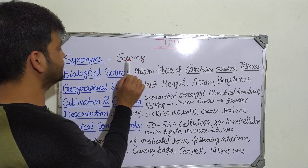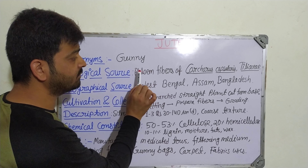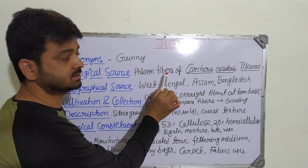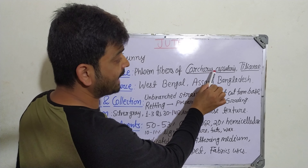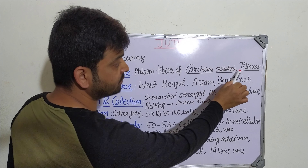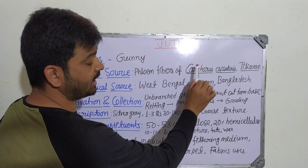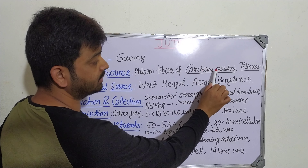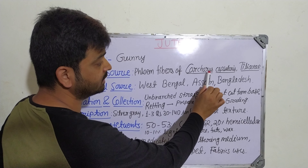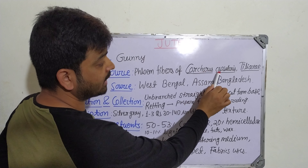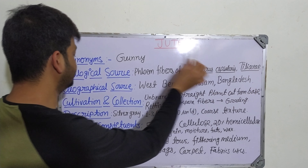It is also known as gunny. Coming to the biological source, it is nothing but phloem fibers of Corchorus capsularis, belonging to the family Tiliaceae. You have to remember this plant name from where we are getting the jute fiber — Corchorus capsularis, family Tiliaceae.